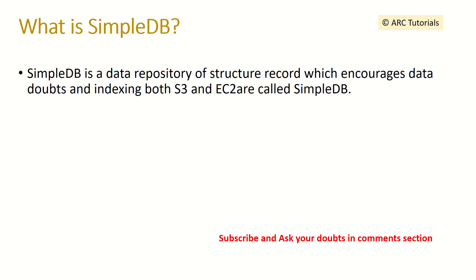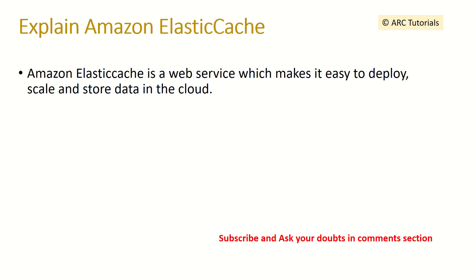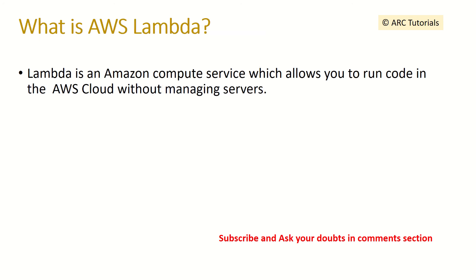What is SimpleDB? SimpleDB is a data repository of structured records which encourages data storage and indexing for both S3 and EC2. Explain Amazon ElastiCache. Amazon ElastiCache is a web service which makes it easy to deploy, scale, and store data in the cloud.